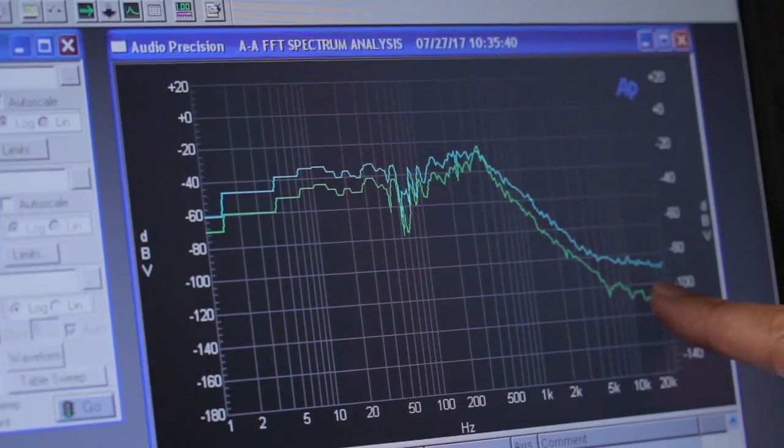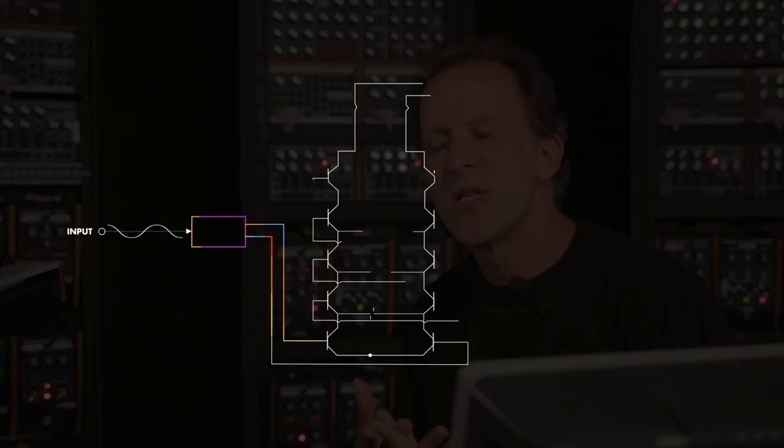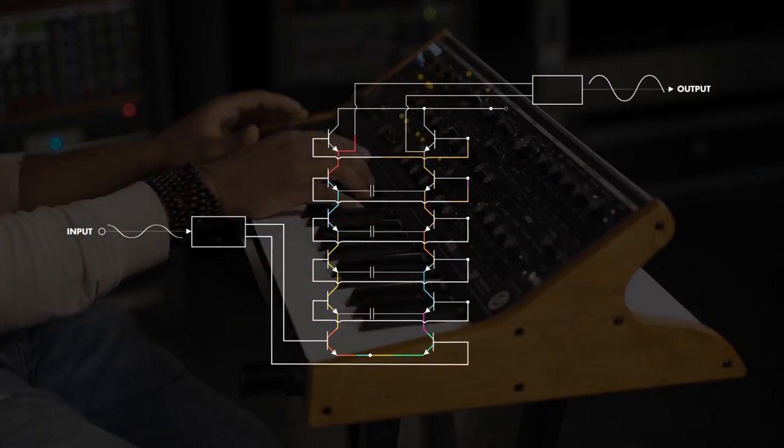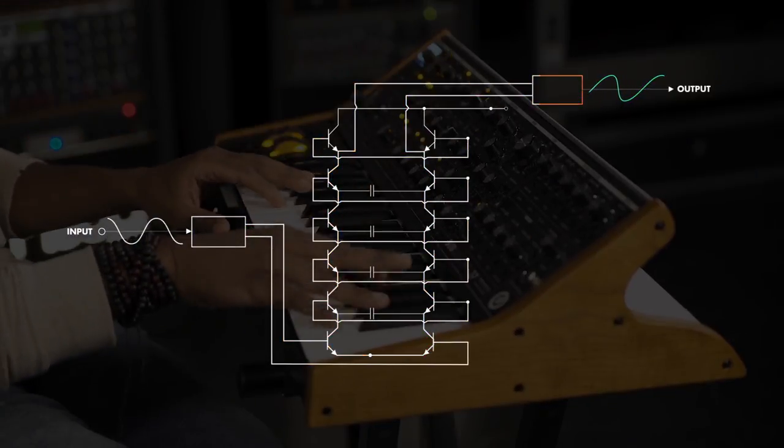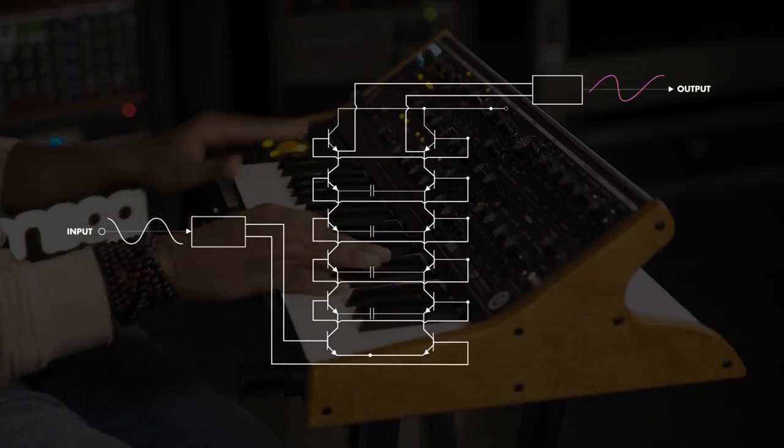The reason we wanted to do that was the classic Moog Ladder filter that Bob developed in the 60s has a very unique coloration as the filter is pushed harder and harder, and it adds very rich harmonics to the instrument.